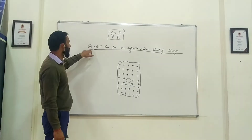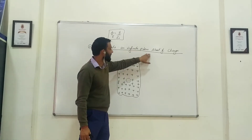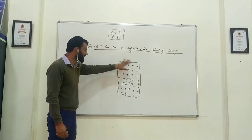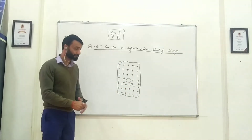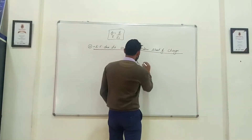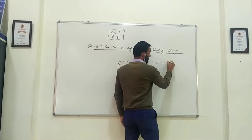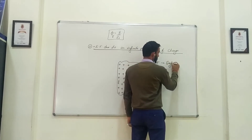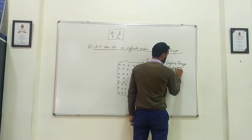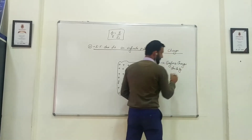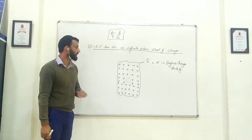In the second application, we calculate the electric field due to an infinite plane sheet of charge. So you have a plane sheet of charge which contains a lot of charges. We assume the area of this to be S and sigma to be the surface charge density.